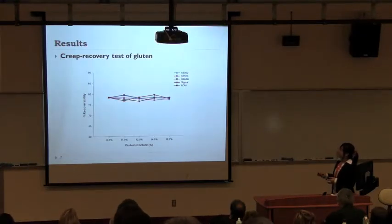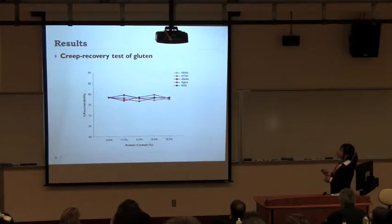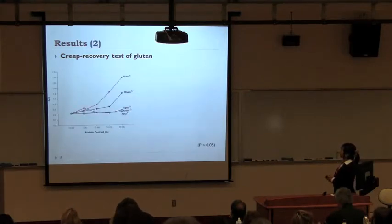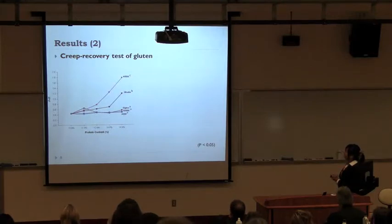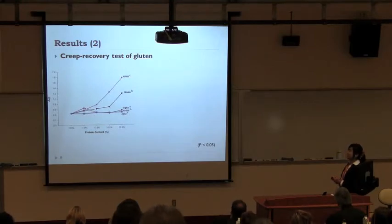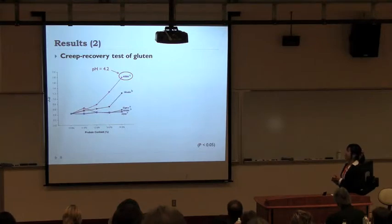Looking at the effect of protein content on the percent recoverability for each flour and product, there is no significant difference in percent recoverability when tested with the creep-recovery test. For the viscosity results, two products show an effect on the viscosity of gluten when we increase the protein content. This can be explained by their acidity and molecular size — one product has high acidity and another has low molecular weight.